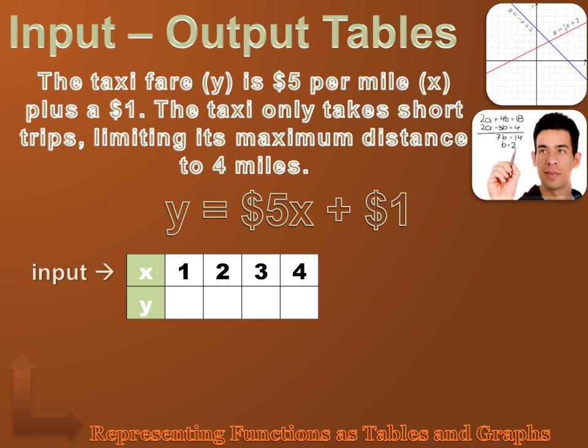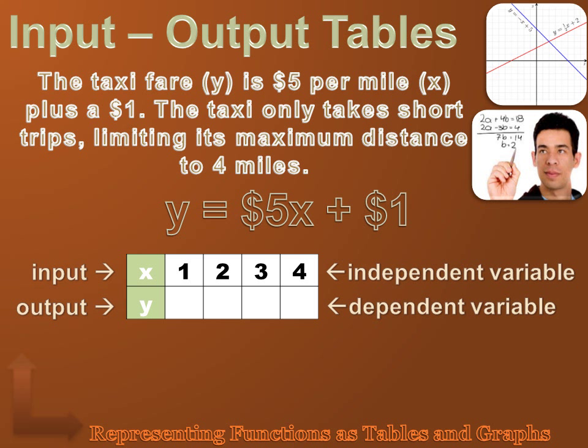Now, I call the x values the input values and the corresponding output values are called the y values. And there's some additional terminology you need to know too. We call the x values the independent variables because they're not dependent upon the function. And we call the y values the dependent variable. It's dependent because it's going to change depending on what x value we use, and it's dependent also upon what the function says.